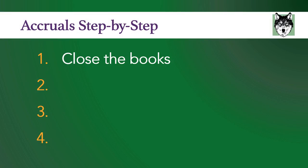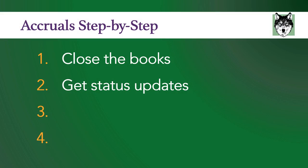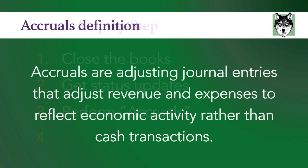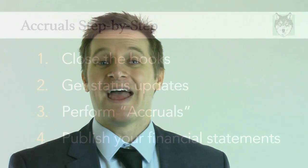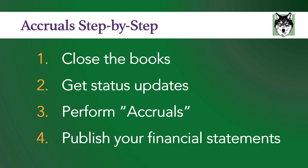Here is a practical step-by-step of what accountants do to generate accrual financial statements. First, every month you close the books — you do a set of reporting that captures what's happened that month and make accrual adjustments. Second, you get status updates from your project manager to understand what's actually happened. Third, you perform accruals, which are adjusting entries that adjust revenue and expenses to reflect the actual economic activity. Finally, you publish your financial reports.